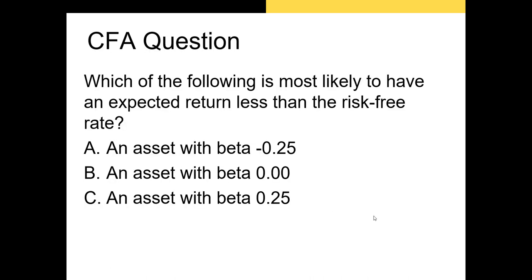Let's try a CFA question. Which of the following is most likely to have an expected return less than the risk-free rate? This is a refresher from the last video where I covered beta. The options are an asset with a beta of negative 0.25, a beta of 0, or a beta of 0.25.